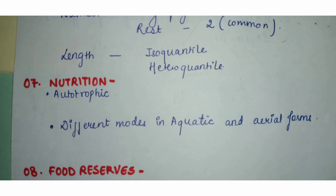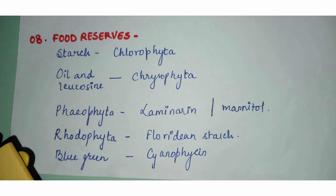Among autotrophs, if some algae use direct sunlight, they are called photo-autotrophs. If some algal forms use sunlight as well as certain chemicals for the production of food, they would also be termed photo-autotrophic.